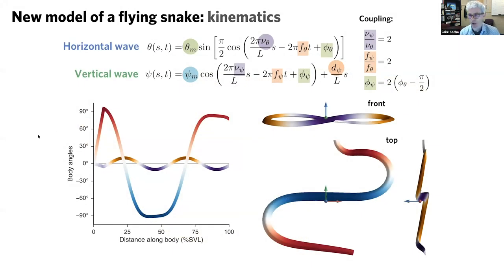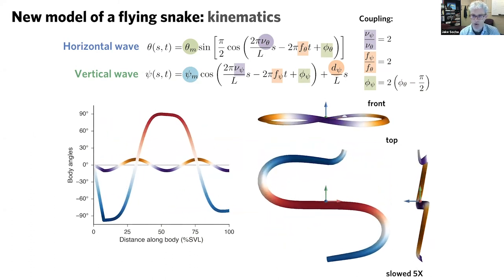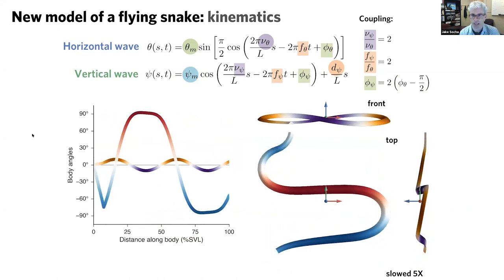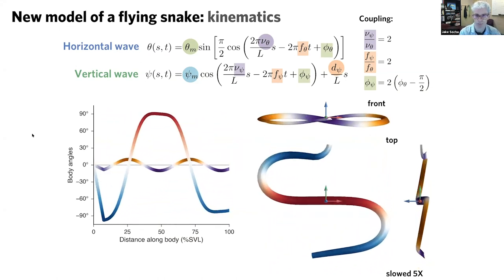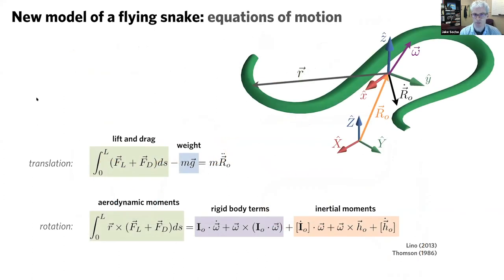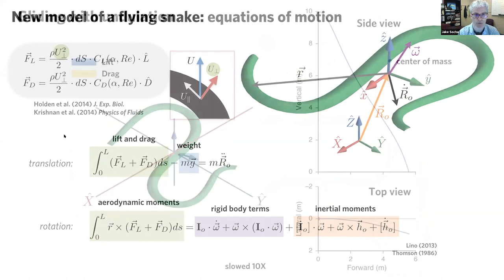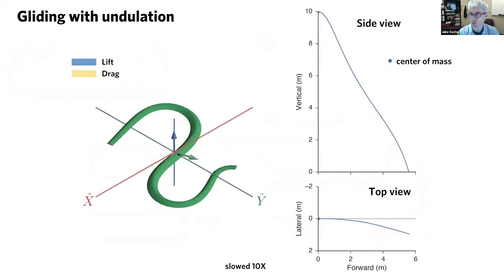With our model, we can now ask questions we could not ask with any other type of experiment. This is a model of the snake using all the features we discovered from the experiment, with dynamic components added. We can now do this: simulate gliding with undulation. You see the lift and drag forces being generated on the animal. It's not perfect, but it's pretty good. Not as good as the real flying snake, but close.